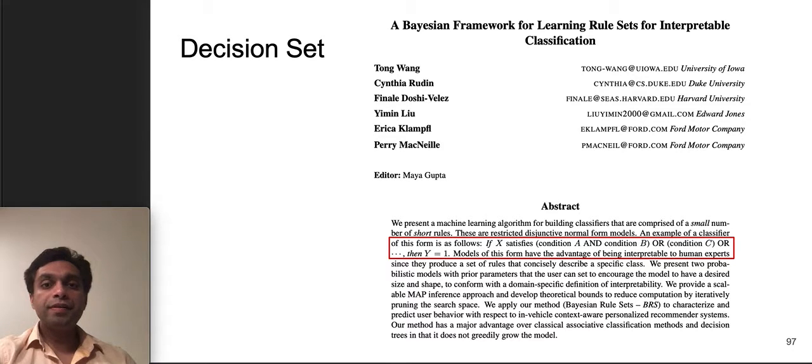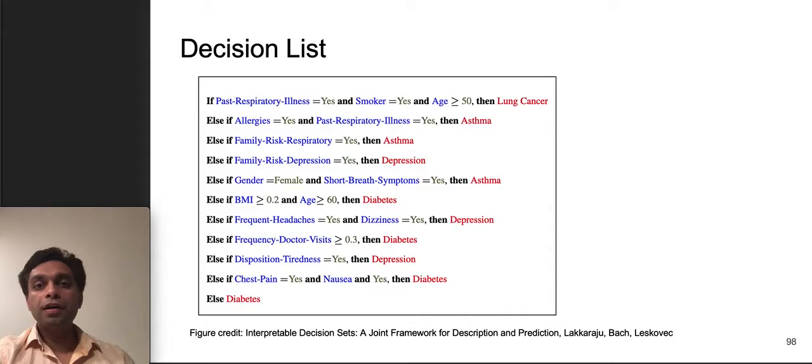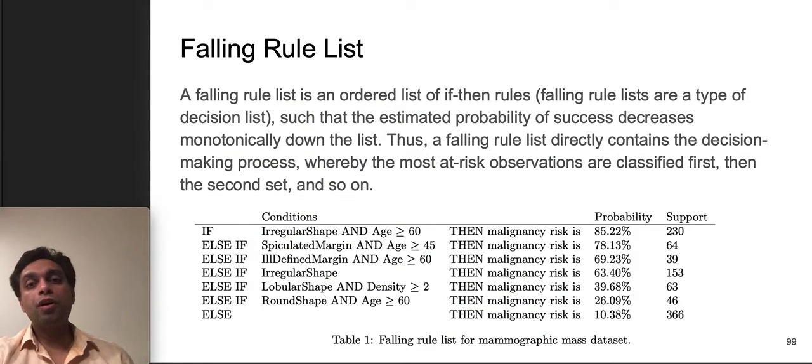A problem or a challenge with decision sets is that there is no notion of order which sometimes is desirable especially if the number of items in a set is very large and you want to look at the top first for a quick glance. Think of like a doctor trying to use this kind of a classifier for making decisions and if there are thousands of items in the decision set then they won't have a chance to look at all of them. You want a notion of like a list. To address that challenge the notion of a decision list has also been introduced and it's basically like an if, else if, else if kind of a situation. You look at the first clause then you move to the next one and then you basically end up in the default clause towards the end.